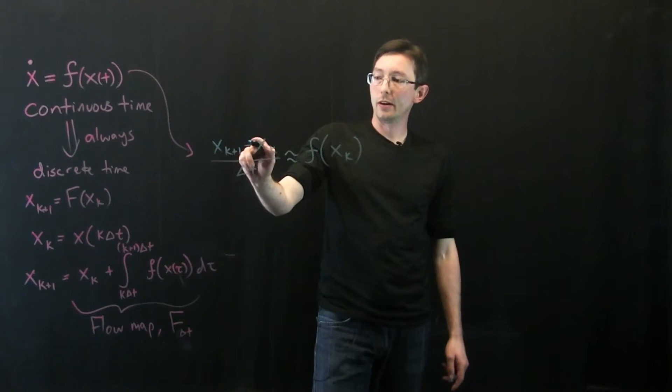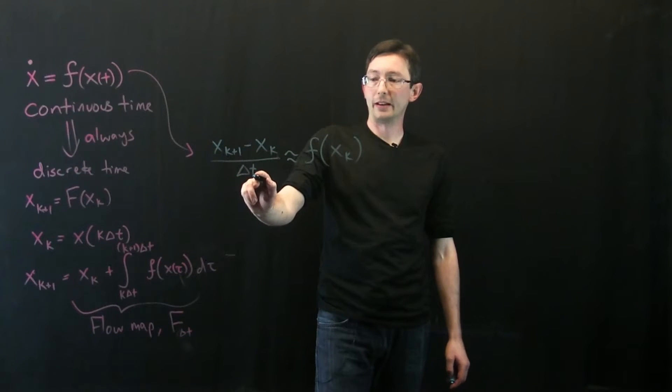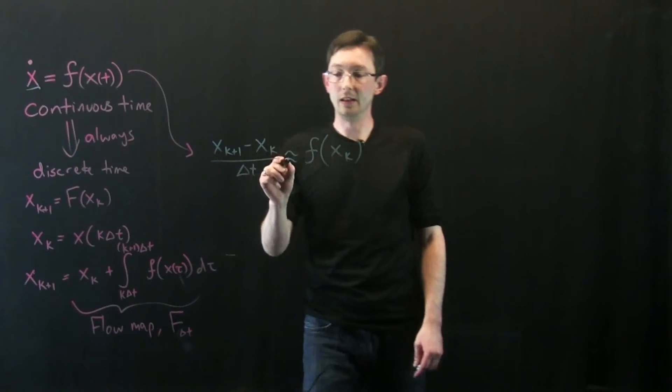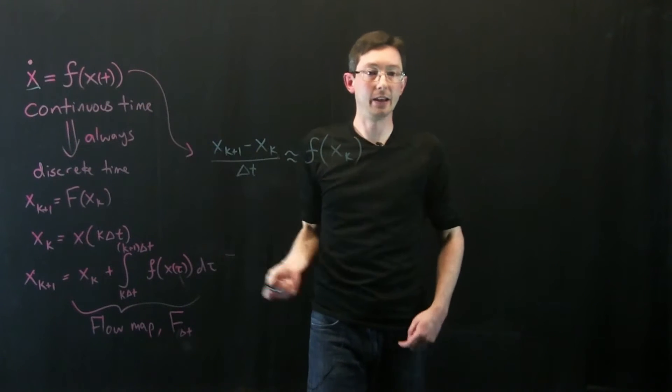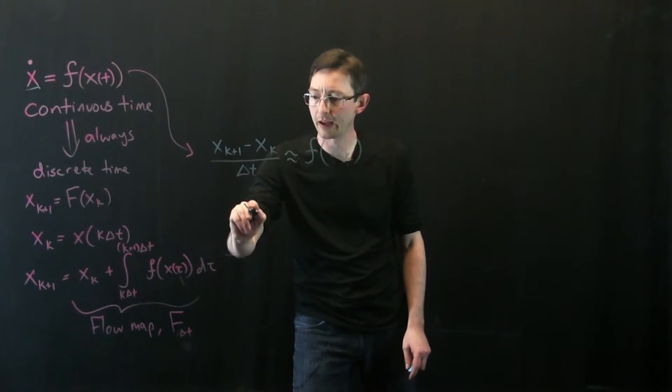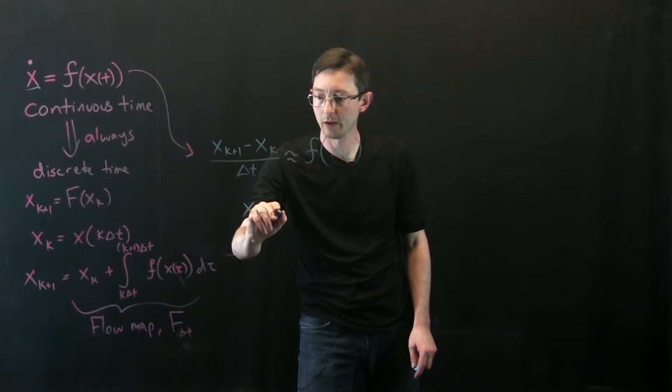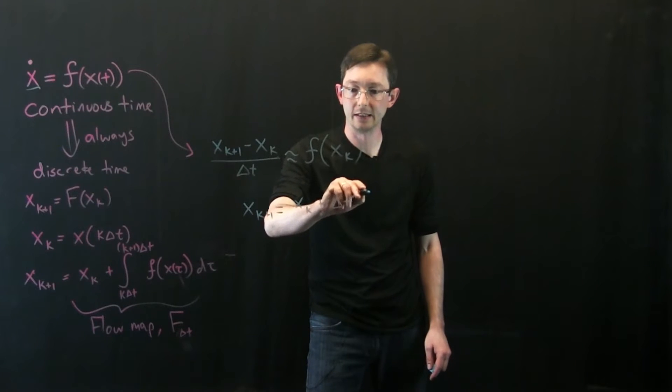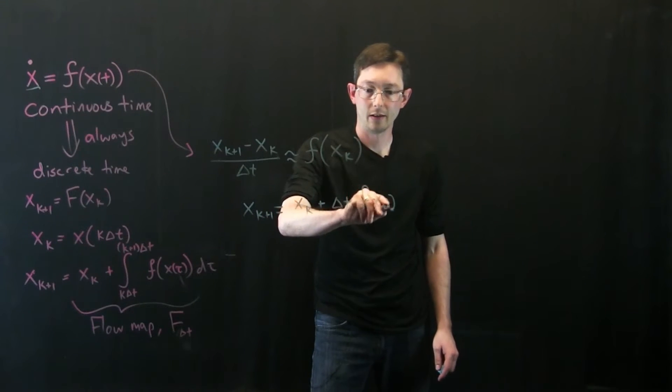x k plus 1 minus x k divided by delta t, this is a finite difference approximation of this derivative here. This derivative here is approximately equal to f evaluated at x k and now I can multiply everything over and I get x k plus 1 equals x k plus delta t times f of x k.